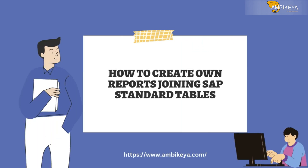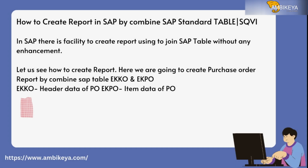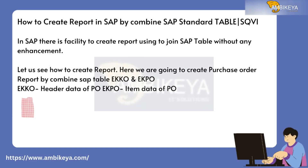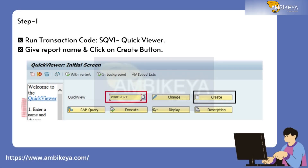How to create your own reports by joining SAP standard tables. In SAP there is a facility to create a report using SQVI to join SAP tables without any enhancement. We are going to create a purchase order report by combining SAP tables EKKO and EKPO. EKKO is the header data of PO and EKPO is the item data of PO.